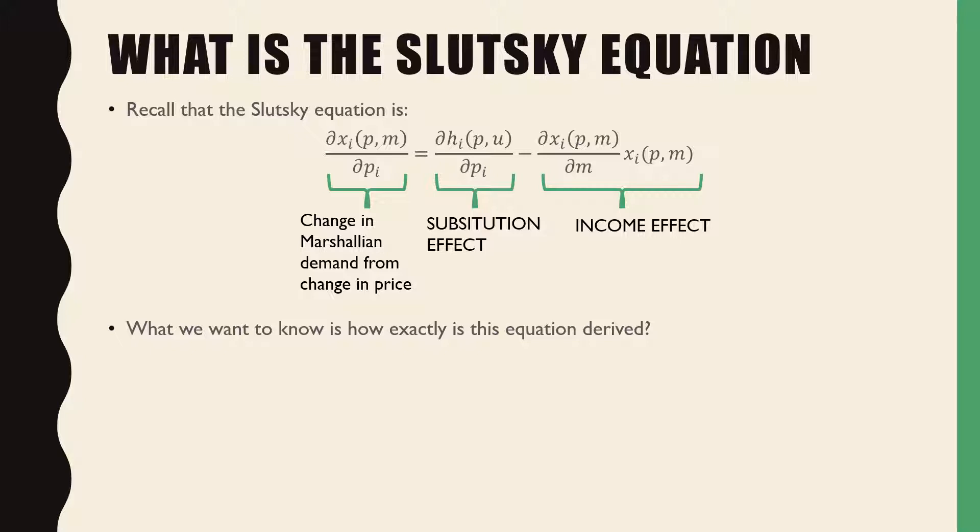So let's just recall what the Slutsky equation is. The Slutsky equation states that for any change in Marshallian demand from the change in its own price, is composed of a substitution effect and income effect. The substitution effect is given by taking the Hicksian demand for that good and deriving it with respect to the price of that good. And the income effect is taken by taking the derivative of our Marshallian demand with respect to income M and multiplying it by that Marshallian demand originally. So what we want to know now is how exactly is this equation here derived?